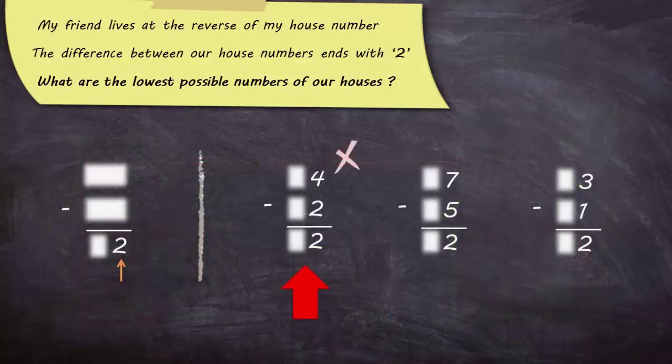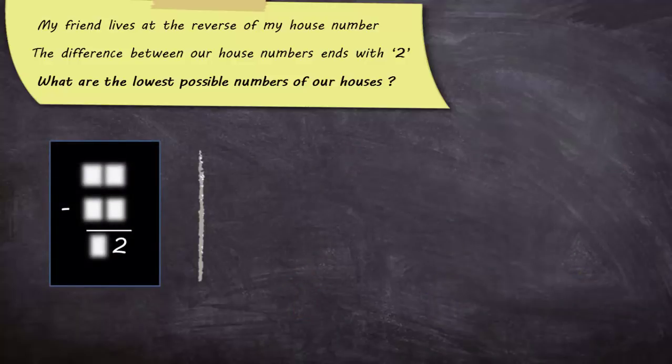Same thing will happen with other candidates such as 7 minus 5 or 3 minus 1. So, we need to find out the cases where subtraction with borrowing should give a number ending with 2. And there are two such cases.